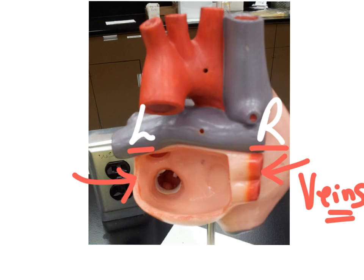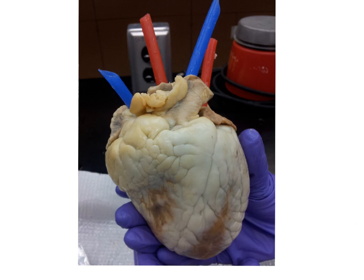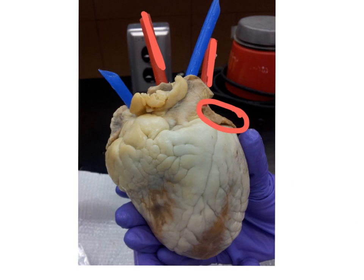So the oxygenated blood comes back right here into the left atria. It is a bit difficult with the sheep heart to determine, of the two vessels, which one is the aorta and which one is the pulmonary vein. If we're looking at this little flap right here — there's one there and one there.